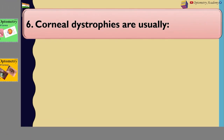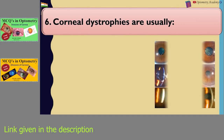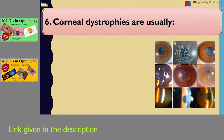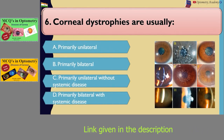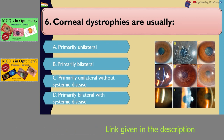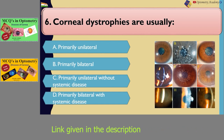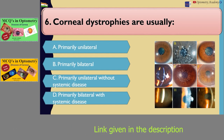Corneal dystrophies are usually: A. Primarily unilateral. B. Primarily bilateral. C. Primarily unilateral without systemic disease. D. Primarily bilateral with systemic disease.